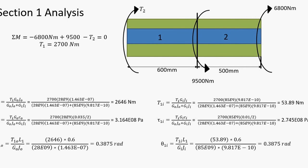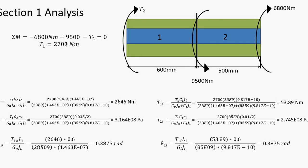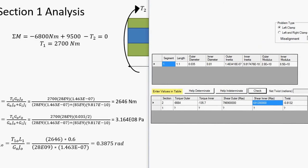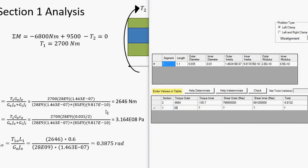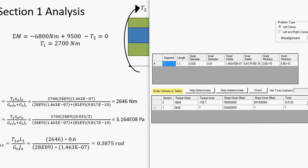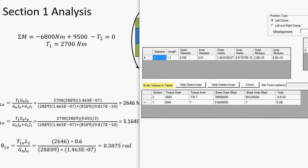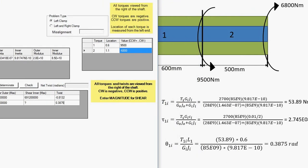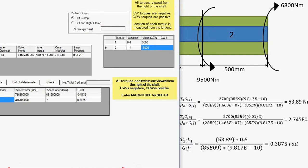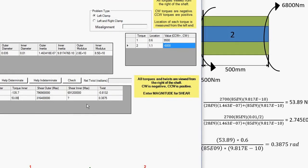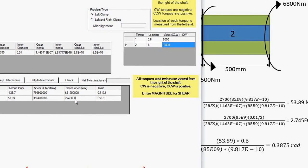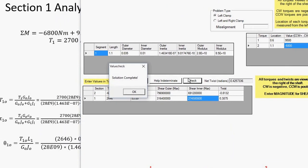Moving on to section 1, the process is the same. In the summation of moments you now have to factor in that 9500 Newton-meters counterclockwise, resulting in a clockwise reaction. Enter the outer values, the twist — which is in radians, somewhat like being unitless — and then the inner torque. Solution complete.